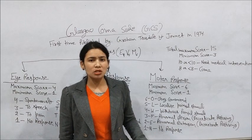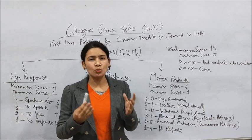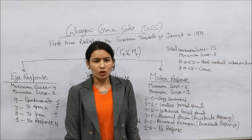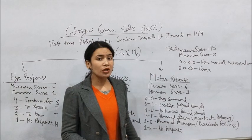We give a score of three for decorticate posturing and a score of two for abnormal extension, which is decerebrate posturing. Decerebrate posturing occurs when there is an injury to the brainstem. When pressure is applied to the patient, the arms extend outward and the lower extremities also go into extension.